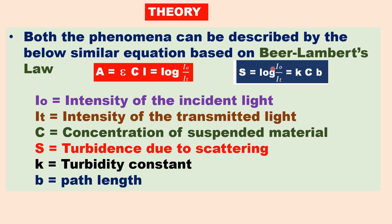Both nephelometry and turbidimetry are based on Beer-Lambert's law. A similar equation is used: A (absorbance) = εCl = log(I₀/Iₜ), where I₀ is the intensity of the incident light and Iₜ is the intensity of the transmitted light. In turbidimetry, due to scattering or absorption of light, C is the concentration of suspended material in the solution or in air, K is the turbidity constant, B is the path length, and here the molar absorption coefficient is replaced by the turbidity constant.